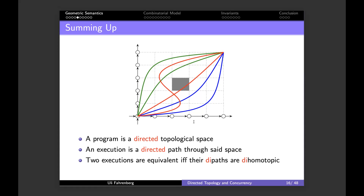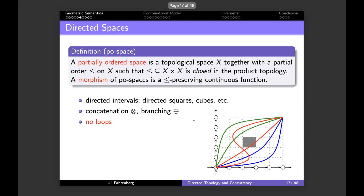This geometric setting was discovered roughly 25 years ago. We need to talk about directed topological spaces. One way to put a direction into a space is by putting a partial order on it: take a topological space, put a partial order on its points, and require a compatibility condition that the partial order is closed in the product topology. These are called po-spaces, and they are rather old.